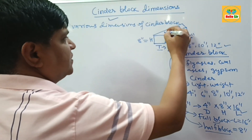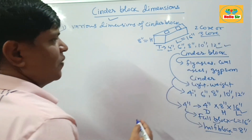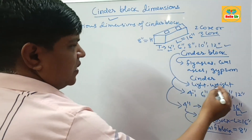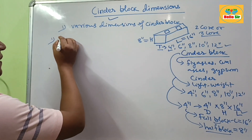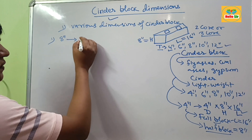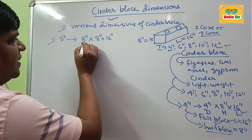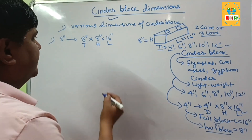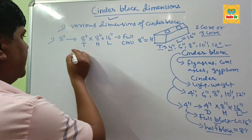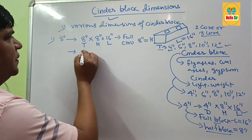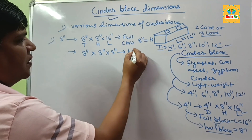It is a hollow block with two or three cores, which is why it is light, and it is made from light material. Now, the first standard size is the 8-inch block: 8-inches thick, 8-inches in height, and 16-inches in length. This is called a Full CMU — also known as a Concrete Masonry Unit. The half of this block is 8-inches thick, 8-inches in height, and 8-inches in length. This is called a Half CMU.